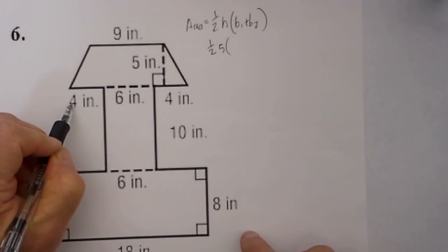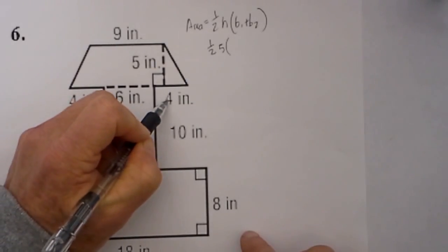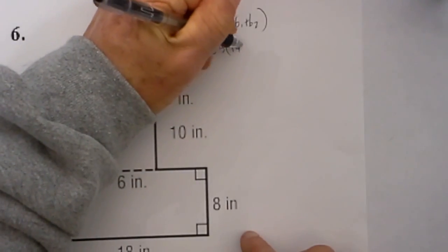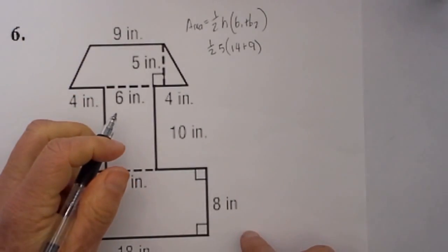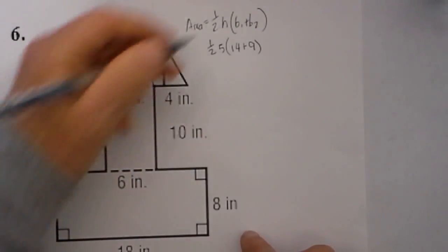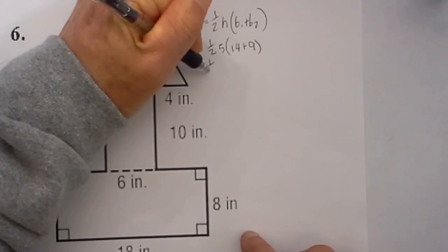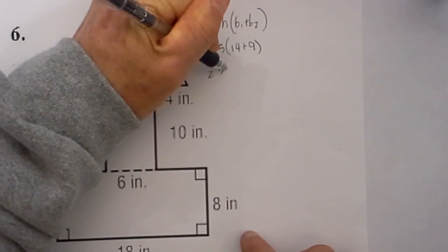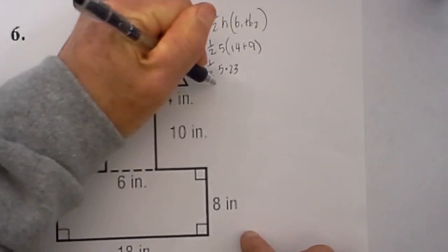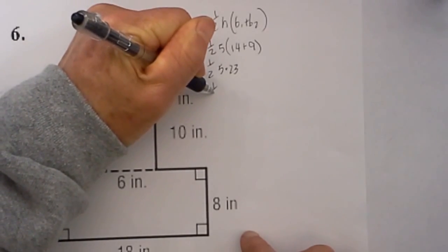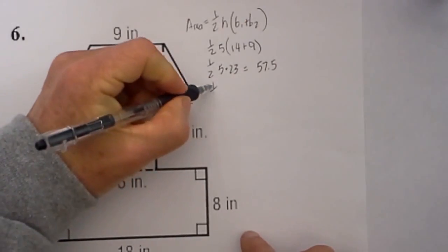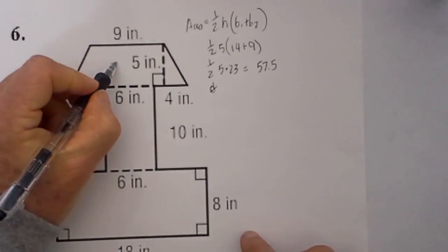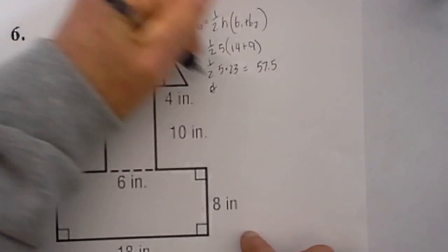This is a little tricky. We have 4 plus 6 is 10, plus 4 is 14, plus 9—and 14 plus 9 is 23. So it would be 1/2 times 5 times 23, which equals 57.5. So the area of this trapezoid is 57.5.